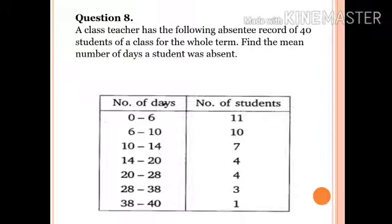Question number 8: A class teacher has the following absentee record of 40 students of a class for the whole term. Find the mean number of days students were absent. Number of days: 0 to 6, 11 students; 6 to 10, 10; 10 to 14, 7; 14 to 20, 4; 20 to 28, 4; 28 to 38, 3; 38 to 40, 1 student respectively.